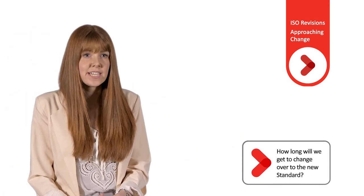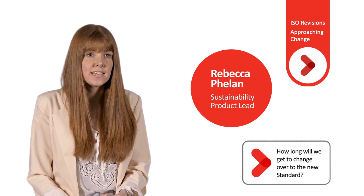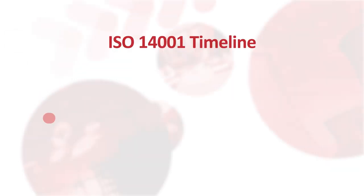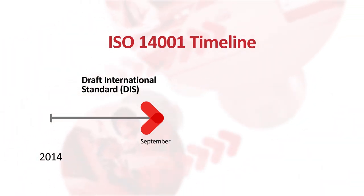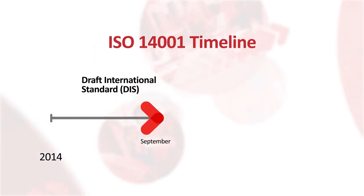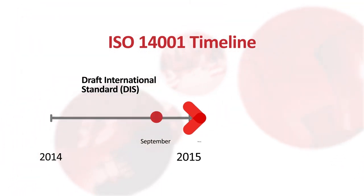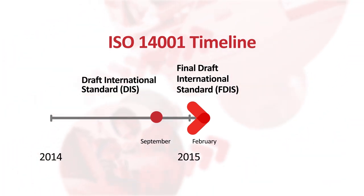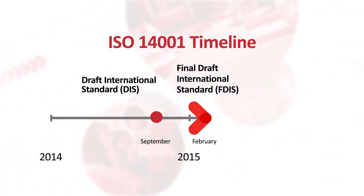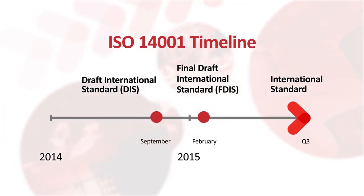The ISO 14001 International Committee are still working on the new standard. Key timings are likely to be: the Draft International Standard, known as the DIS, is expected to be published for ballot around September 2014, but these timings may move. The final Draft International Standard, known as the FDIS, is expected to be published for ballot early 2015. And the International Standard is expected to be published in late summer 2015.